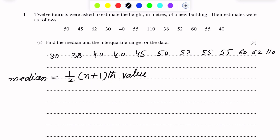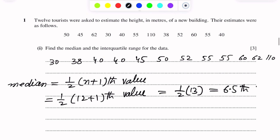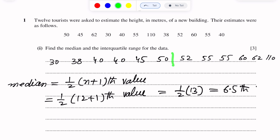So we calculate (1/2)(12+1) which equals (1/2)(13) = 6.5. The median lies at the 6.5th position. Counting from the start: 1, 2, 3, 4, 5, 6 — and 6.5 lies here, between the 6th and 7th values, which are 50 and 52.